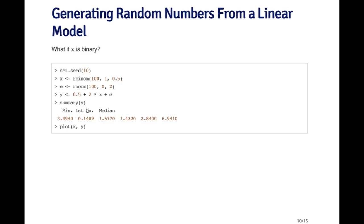Now when I look at the summary of y, I see the mean is about 1.4 and it ranges from about -3 to 6 or 7. Now when I plot the data, of course, they'll look very different.